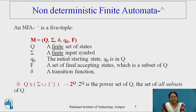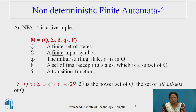As we have already seen, finite automata can be grouped or characterized into two types of machine. The first is deterministic finite automata, where there is exactly one path for each and every transition, and non-deterministic finite automata, where there may be zero or more than one transition. DFA and NFA both accept the same type of regular language.